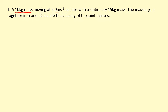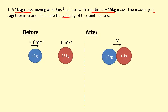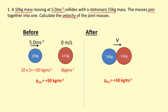We've got a 10 kilogram mass moving at 5 meters per second, colliding with a stationary 15 kilogram mass. The masses join together into one. To calculate the velocity of the joint mass, separate the page into before and after and draw the situation. The 10 kilogram mass has plus 50 kilogram meters per second since it's going right. The 15 kilogram mass has zero momentum. So total momentum before the collision is 50 kilogram meters per second, and total momentum after should also equal 50 kilogram meters per second, provided it's a closed system with no external forces.